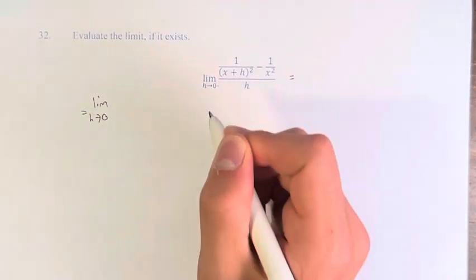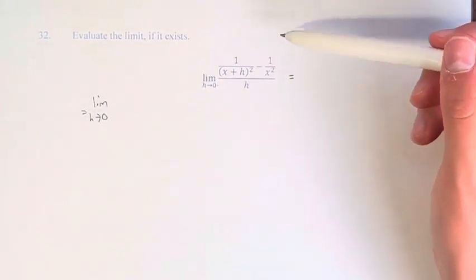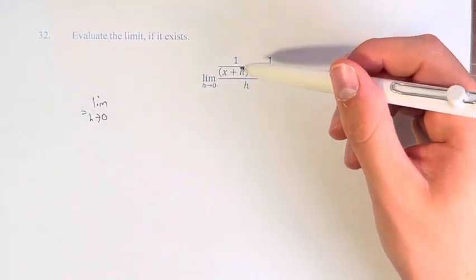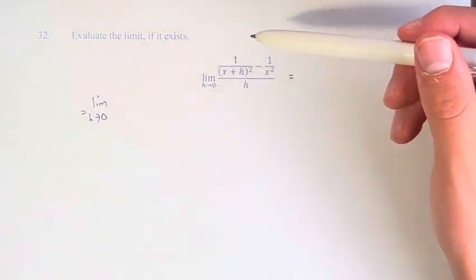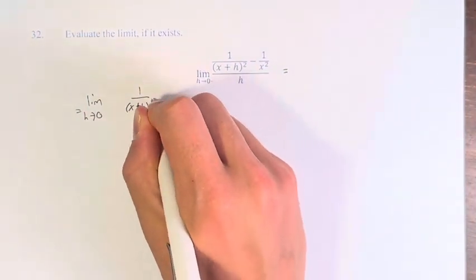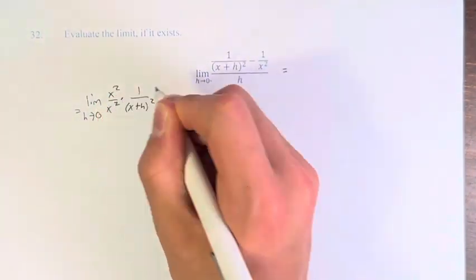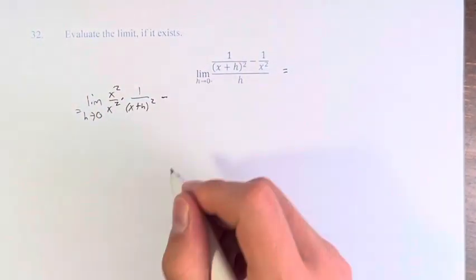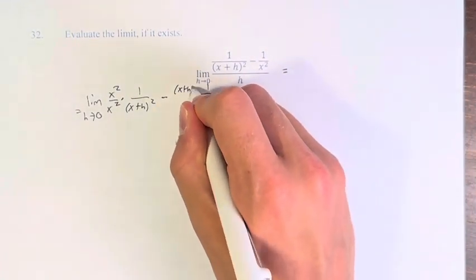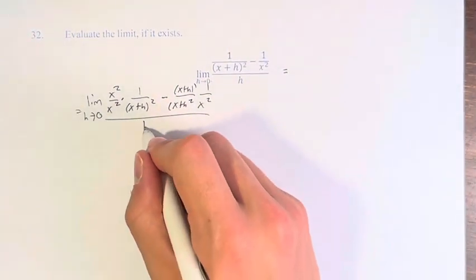We have the limit as h approaches 0, and what we're going to do is turn the top into one fraction. To subtract two fractions you have to get the same denominator. We're going to multiply the denominator of one by the other and vice versa. So we have 1 over (x plus h) squared multiplied by x squared over x squared, subtracting 1 over x squared multiplied by (x plus h) squared over (x plus h) squared. This will all be over h.